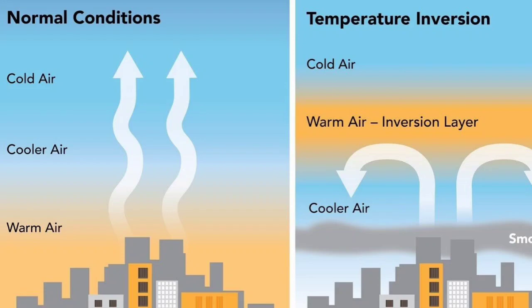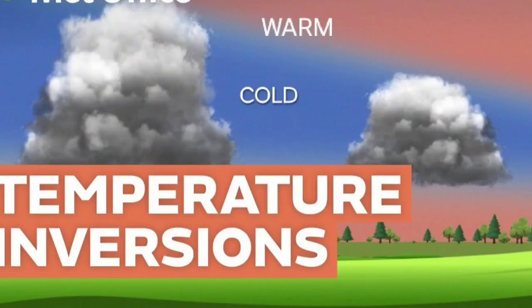Temperature inversion is common during the winter season when the night is long and the sky is clear. The earth's heat is radiated back to the atmosphere quickly during the winter night and the earth's surface becomes cold. So in this situation, temperature inversion takes place as the temperature increases with increasing height in the atmosphere, especially during the morning, as the temperature of the earth's surface becomes colder as compared to the lower layers of the atmosphere.